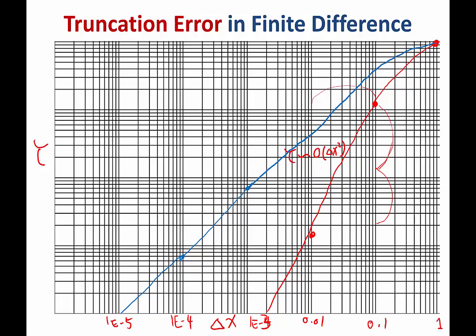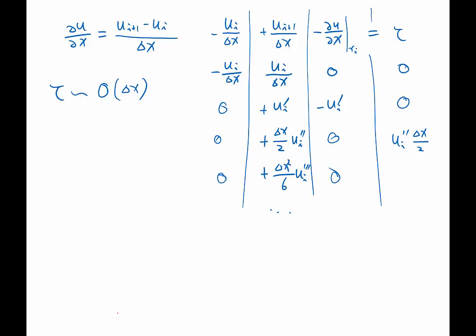Question? If you approximated du/dx using Ui plus 1 minus Ui minus 1 divided by 2 delta x, wouldn't you get more cancellation? Well, that's a good point.